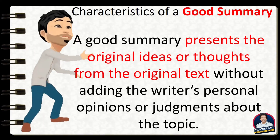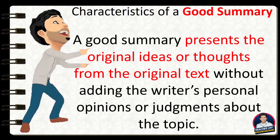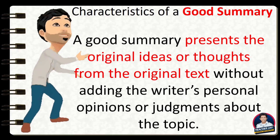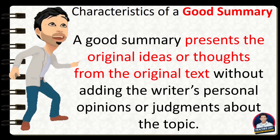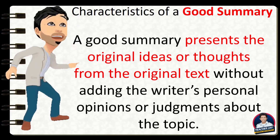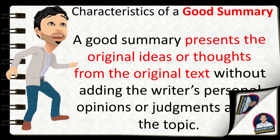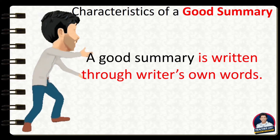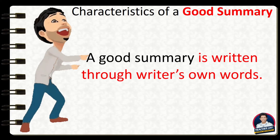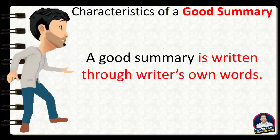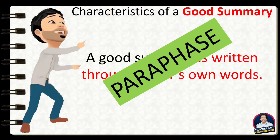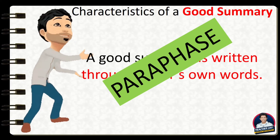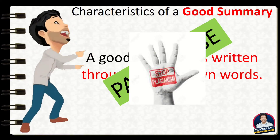A good summary presents the original ideas or thoughts from the original text, without adding the writer's personal opinions or judgments about the topic. It means that a good summary only includes what is in the passage. A good summary is written in the writer's own words — the original text is not exactly copied, but paraphrased. When you paraphrase, be sure the original ideas remain the same. The main purpose of paraphrasing is to avoid plagiarism.